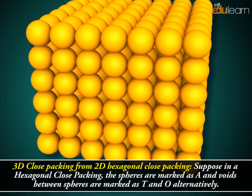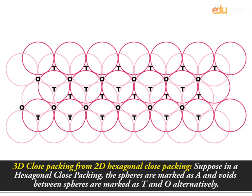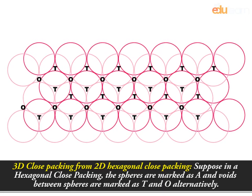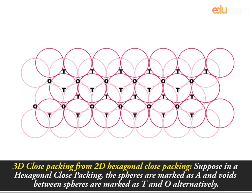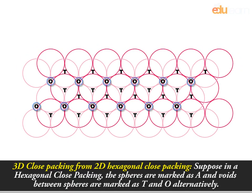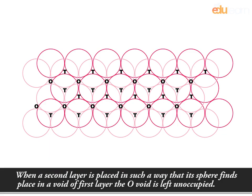3D closed-packing from 2D hexagonal closed-packing. Suppose, in a hexagonal closed-packing, the spheres are marked as A and voids between spheres are marked as T and O alternatively. When a second layer is placed in such a way that its sphere finds place in a void of 1st layer, the O void is left unoccupied.